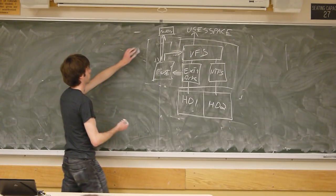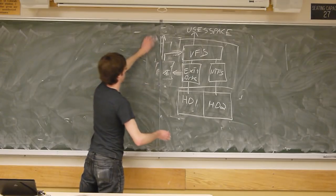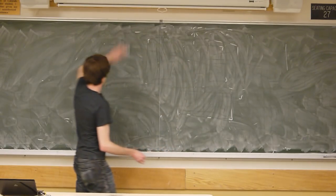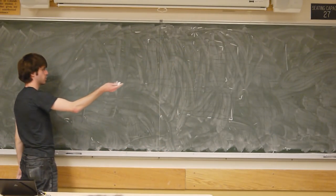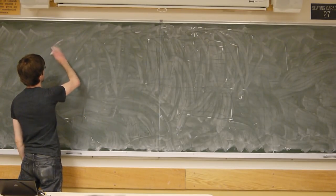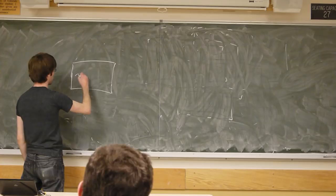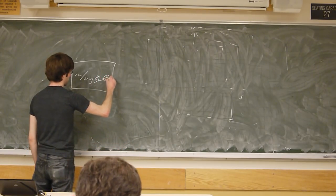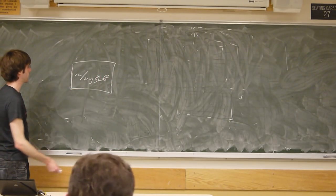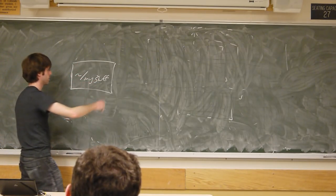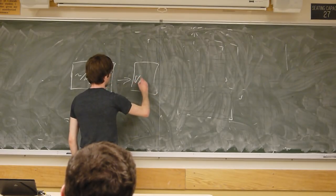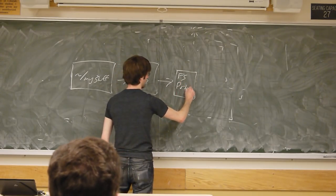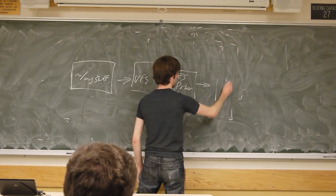So that's the way our file system is going to work. Essentially, your file system — say we have a directory called 'my stuff' in your home folder. Traditionally when we call read or write on this, it just calls directly into the VFS, which goes into whatever file system driver happens to be appropriate, which then goes to the actual hard disk itself.